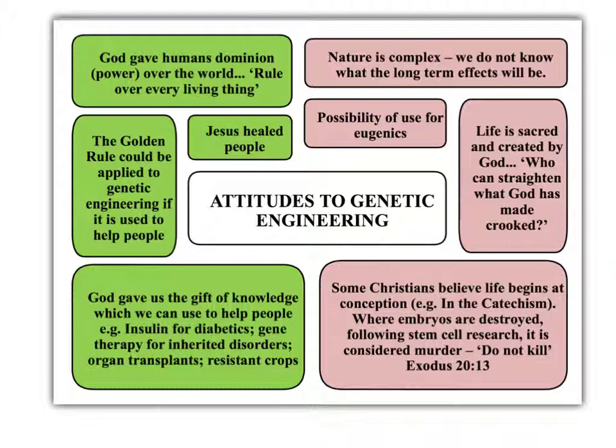It's also possible to create human hearts that grow inside pigs or sheep that could then be used for transplants. Genetically modified foods are also being used — for example, the Flavr Savr tomato has been modified to prevent bruising and to help it grow quickly, avoiding the need for pesticides.